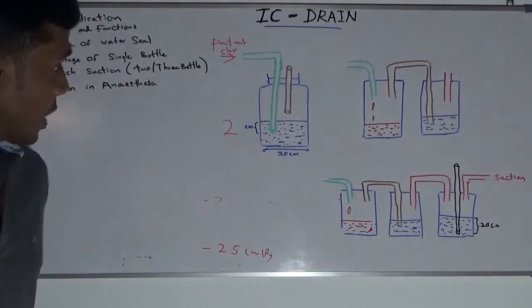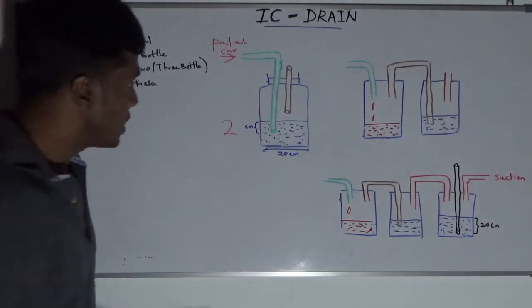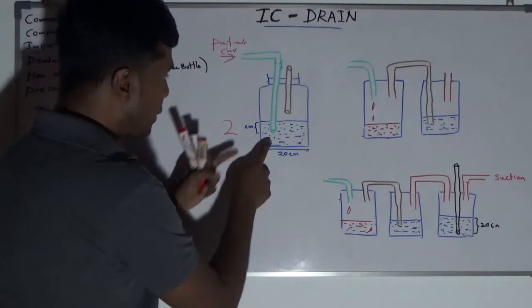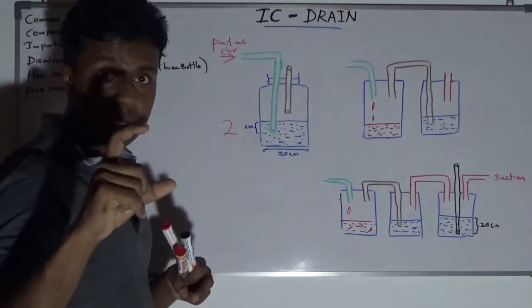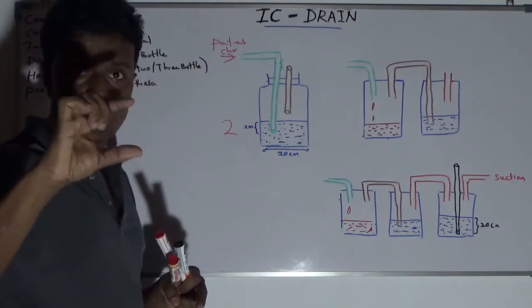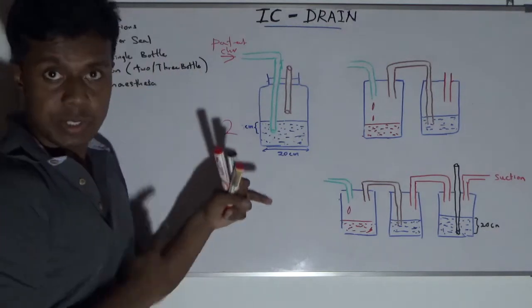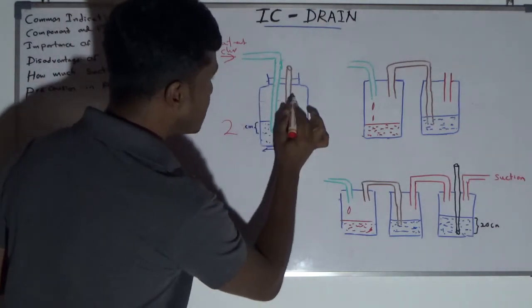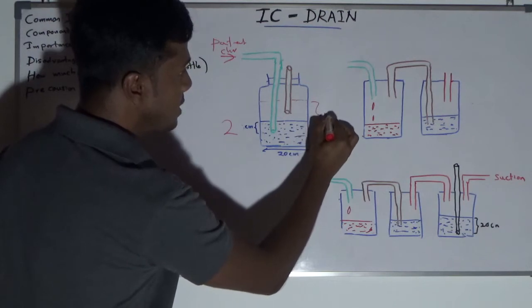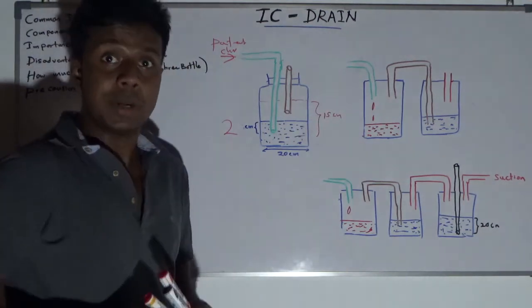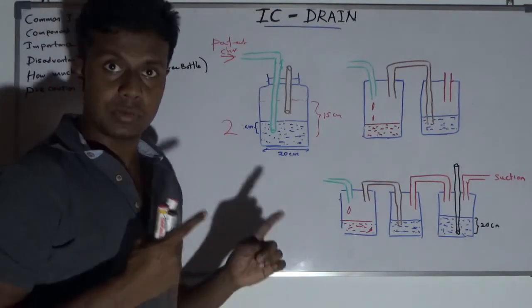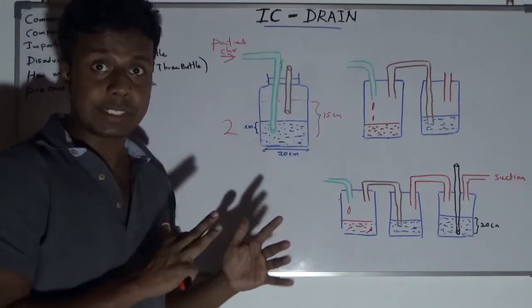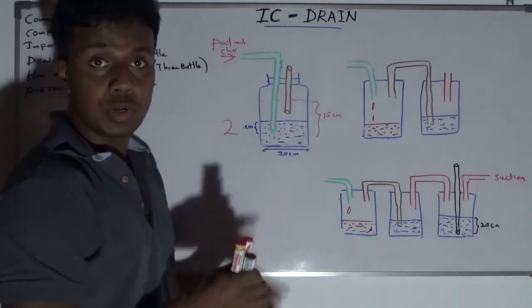Why are we submerging only 2 cm and not more? Because when your patient expires, they must overcome 2 cm of water height pressure in order to remove the gases. If we fill the water up to 15 cm, for example, your patient would need an additional 15 cm water pressure in the pleural cavity in order to remove the air. That means air can still be stuck in the pleural cavity if your water column is too much higher.